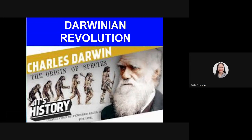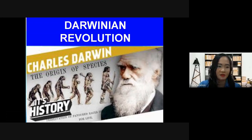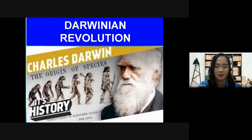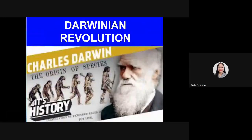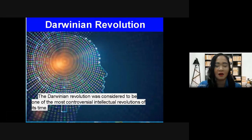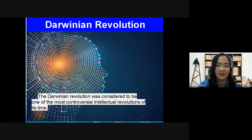As you can see on your screen, this theory is anchored on the evolution theory, also called the Darwinian theory, established by Charles Darwin. The Darwinian Revolution was considered one of the most controversial intellectual revolutions of its time — just like what happened with Nicholas Copernicus's heliocentric model, which proposed that the sun was the center of the universe.